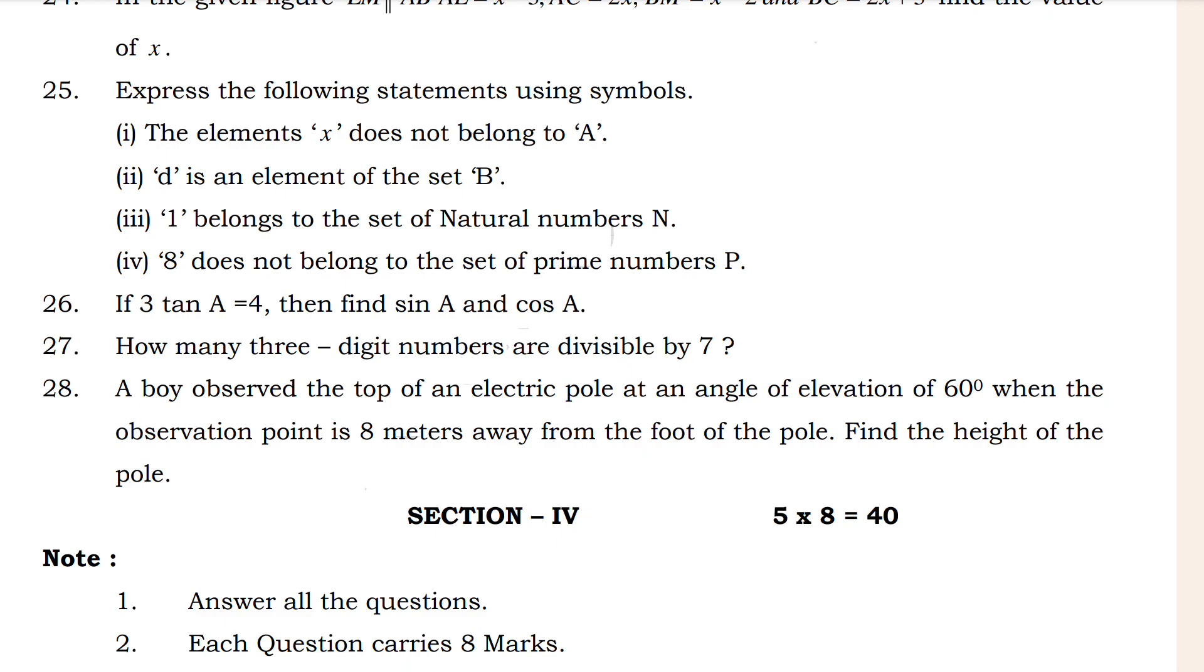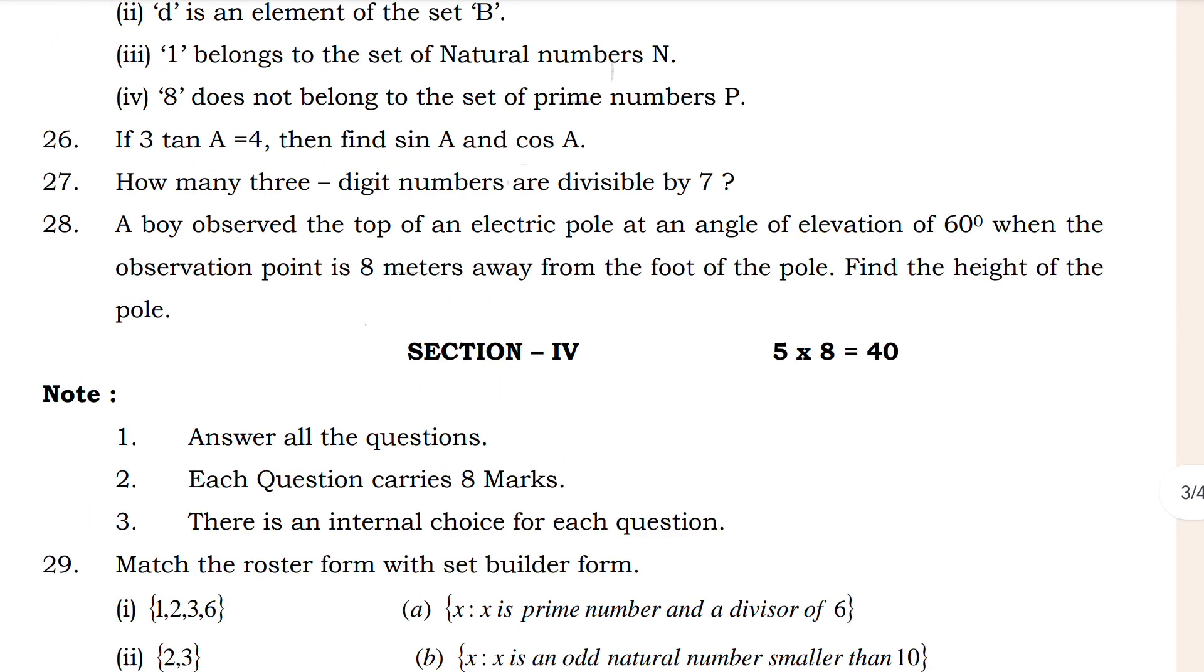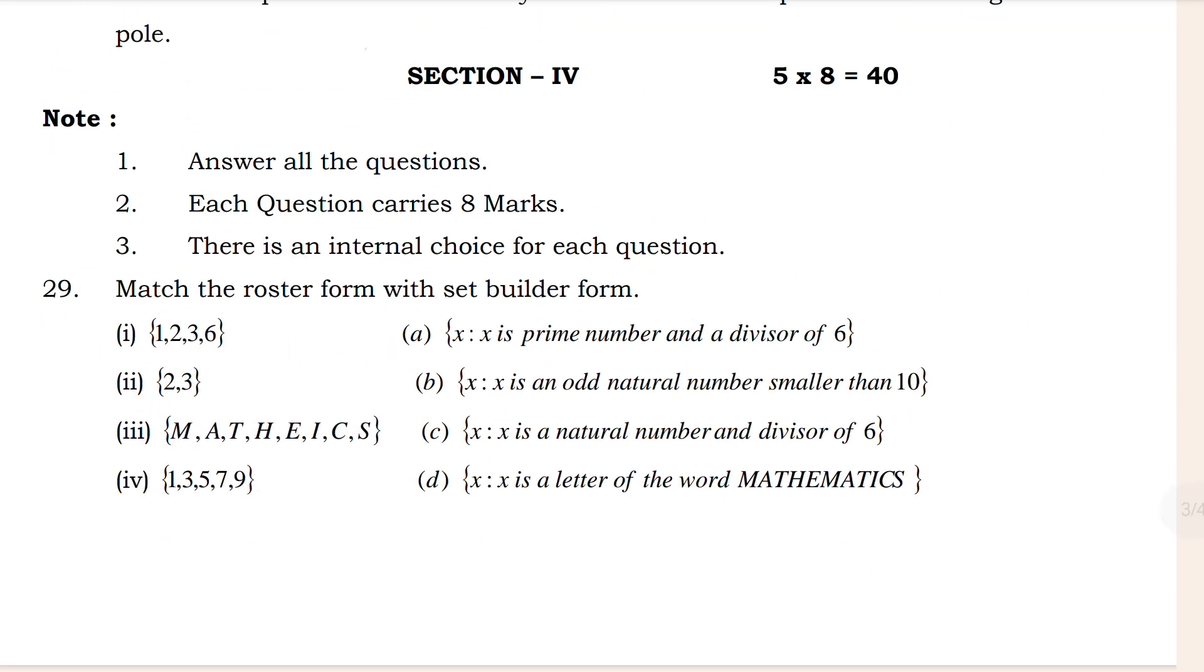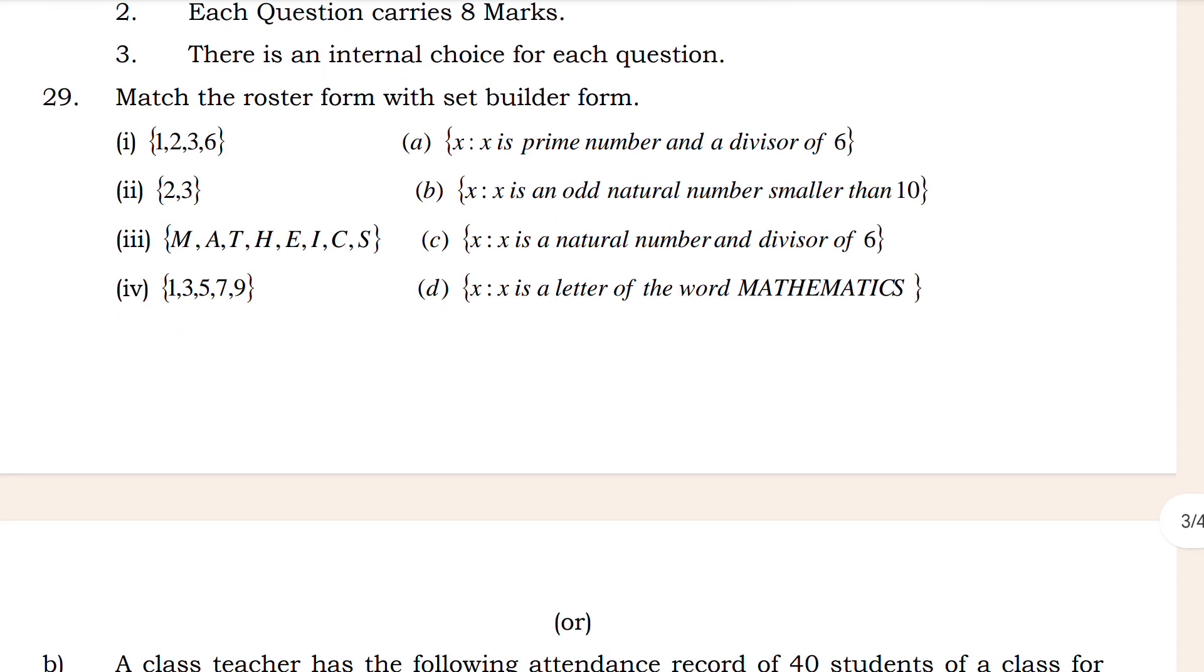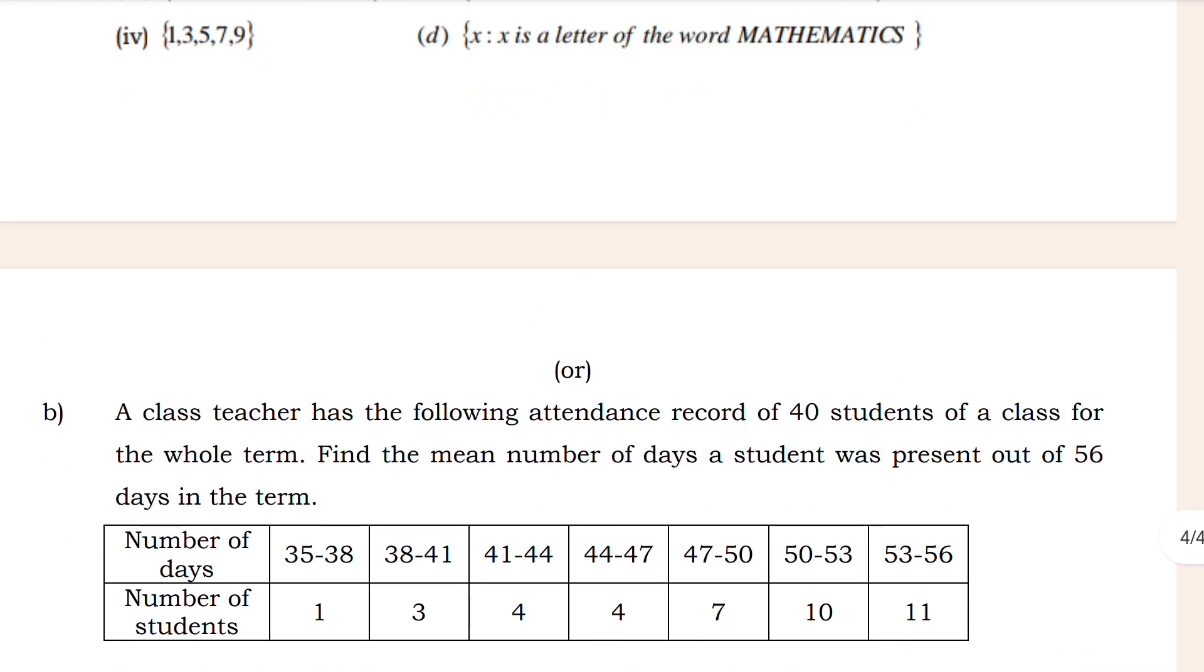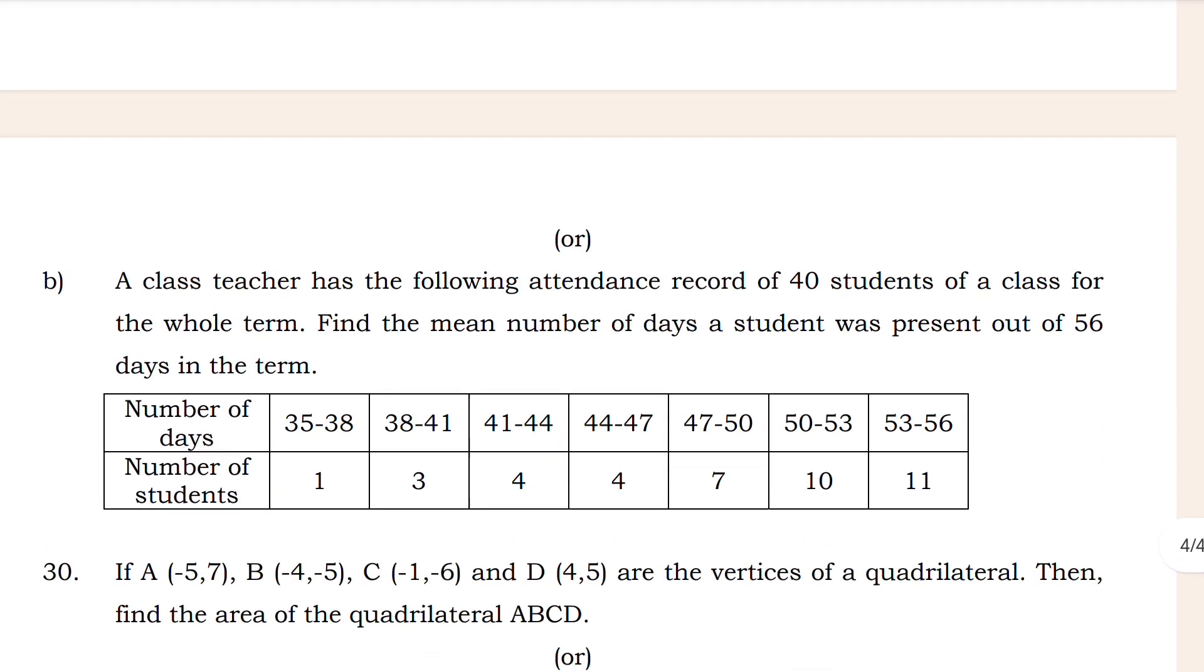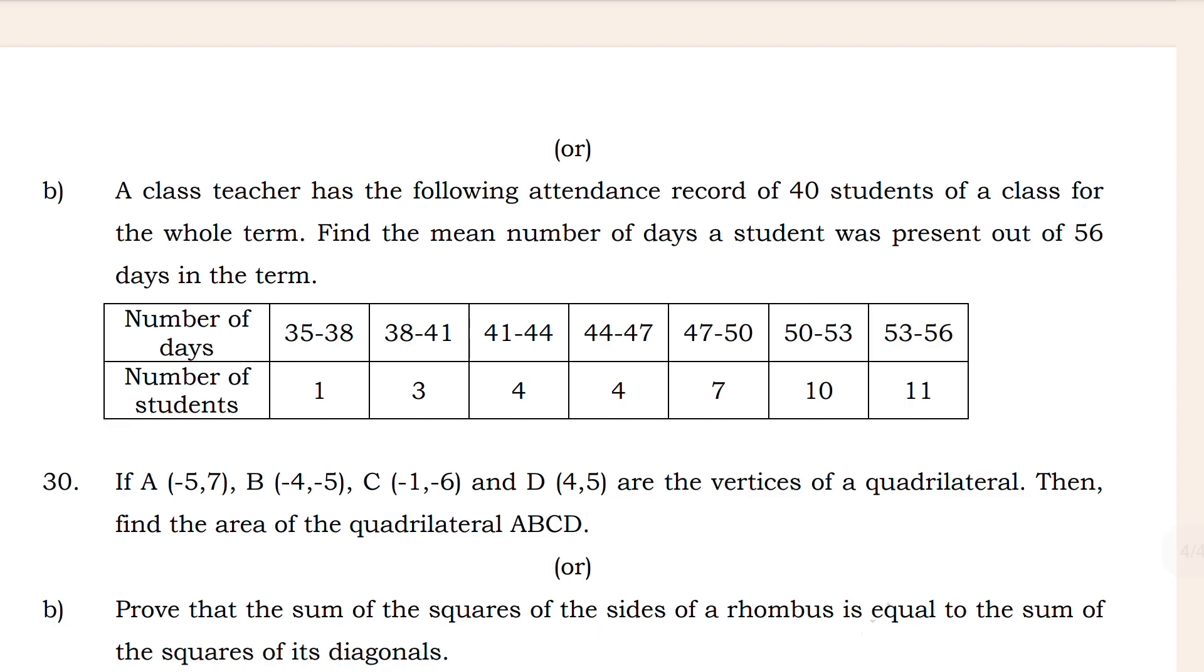28 is not very important but it's important. Is it clear? So here 5×8, five questions given for 8 marks, one question 8 marks, then 5×8 = 40 marks. Questions: match the following roster into builder, that's an important one. This 29 is important and 29b is also very important here.